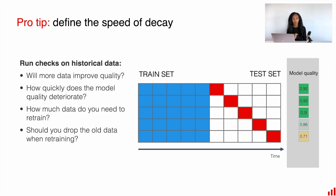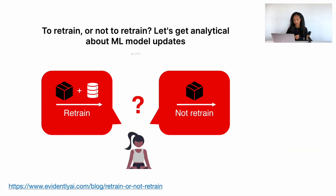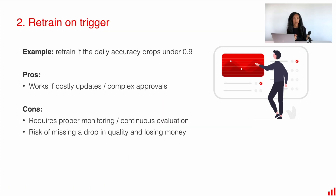You can combine the information and outcomes from experiments about model quality, degradation speed, the amount of data you need to successfully retrain the model, and the speed of getting labeled data. We also have a blog related to this topic, so if you are interested in scheduled retraining or triggered retraining, take a look at our blog. Now let us move to the second strategy.